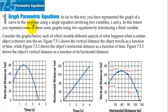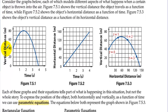In this lesson, you represent some of these same graphs using two equations by introducing a third variable. Consider the graphs below, each of which models different aspects of what happens when a certain object is thrown into the air. Figure 7.5.1 shows the vertical distance the object travels as a function of time, while Figure 7.5.2 shows the object's horizontal distance as a function of time. This one shows its vertical distance — how high the object is at a certain amount of time.